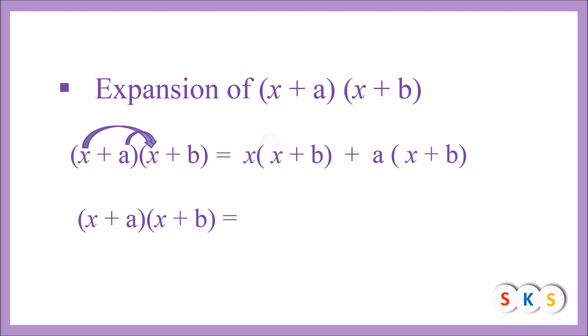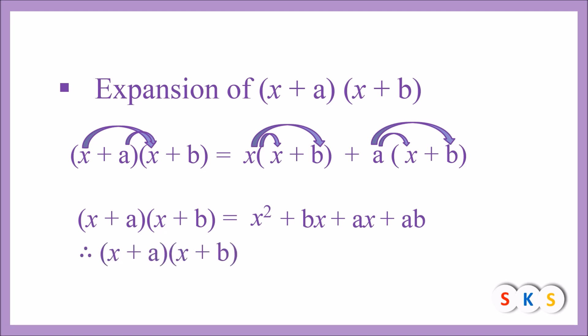So (x + a)(x + b) equals x times x which gives x², then x times b gives +bx, then a times x gives +ax, then a times b gives +ab. Therefore we get x² + bx + ax + ab. The middle two terms have x common, so taking x as common we get x² + (a + b)x + ab. This is the expansion of (x + a)(x + b).